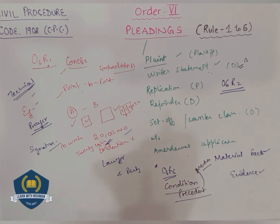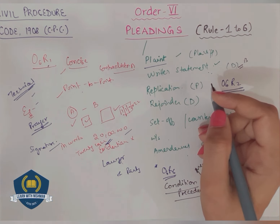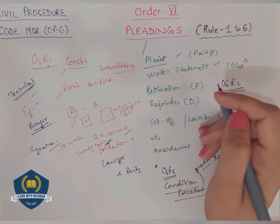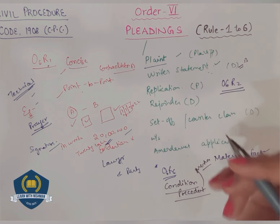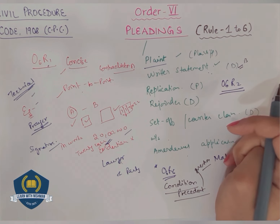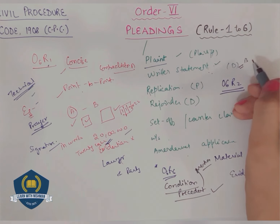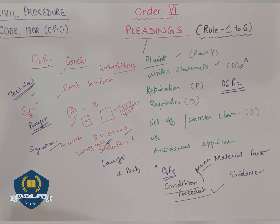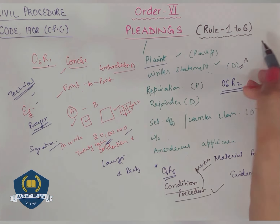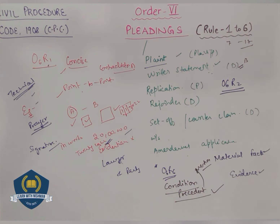So whenever in a transaction there is a condition - that you will do this work only when this happens - and one of the parties claims that the condition precedent has not been fulfilled, then he will have to make a specific pleading in that regard. And if he doesn't plead specifically, then the court will presume that the condition precedent has already been fulfilled - and that will be a loss on your part. You have to mention it. So these are about Rule 1 to 6. I hope you enjoyed this session because we have learned a lot. Stay tuned for the next session. In the next one we will continue with Rule 7 and further - rules 7 to 17 we will do in the next session. Till then, have a good day. Thank you.